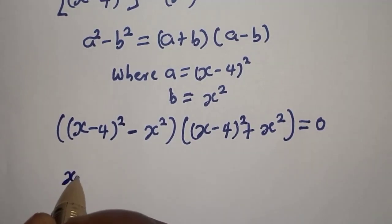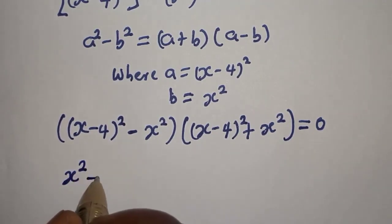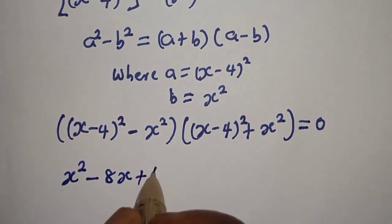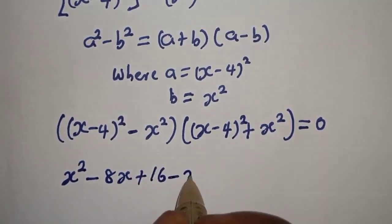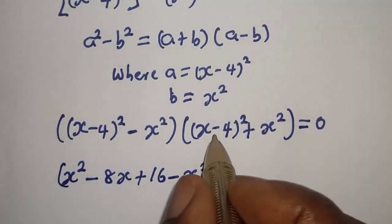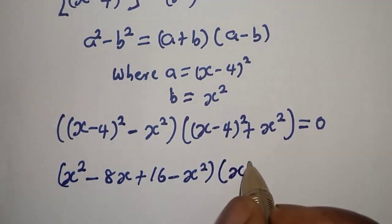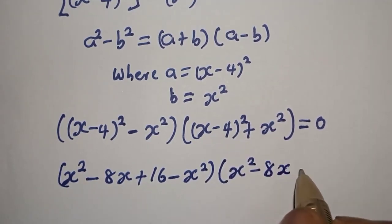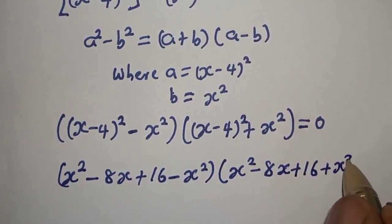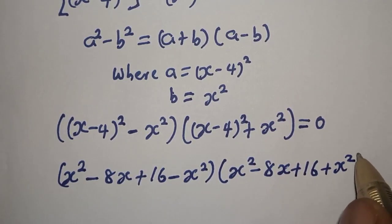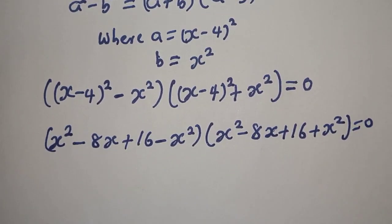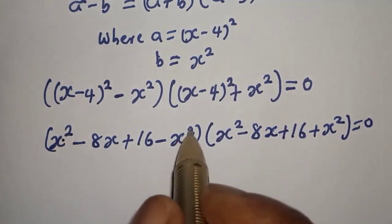Now s minus 4 squared is s squared minus 8s plus 16, then minus s squared. And s minus 4 squared is s squared minus 8s plus 16, then plus s squared. S squared is equal to zero.